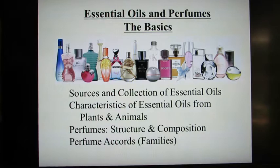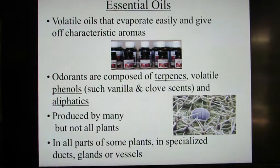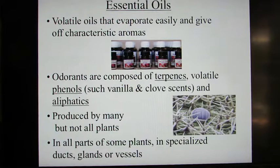Let's start with the definition: essential oils are volatile oils that evaporate easily and give off characteristic aromas. These essential oils can be composed of terpenes, volatile phenols — such as the vanilla and clove scents — and aliphatics. They are produced by many, but not all, parts of plants, and in some plants they are found in all parts, sometimes in specialized ducts, glands, or vessels.